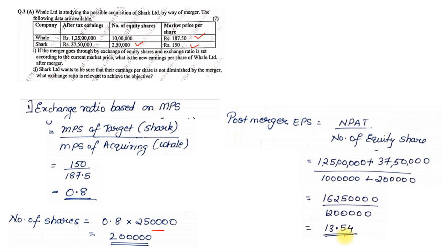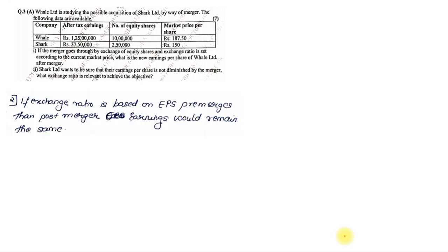The second part asks: Shark Limited wants to be sure that their earning per share is not diminished by the merger — what exchange ratio is relevant to achieve this? Always remember, whenever they tell you that after merger they do not want to diminish their earnings, you should always go with the original pre-merger EPS. If the exchange ratio is based on EPS, the post-merger earnings would remain the same.